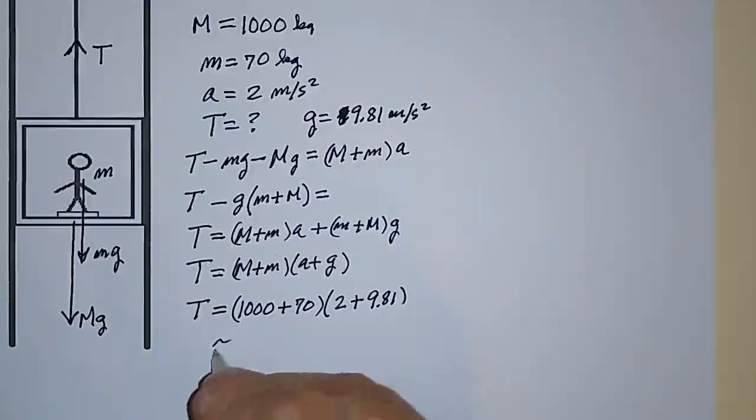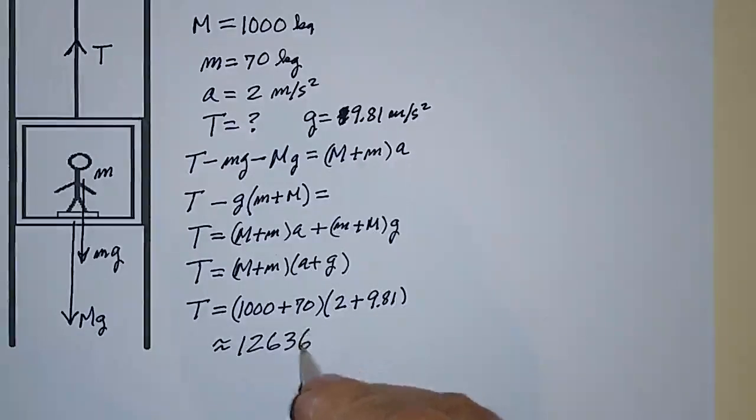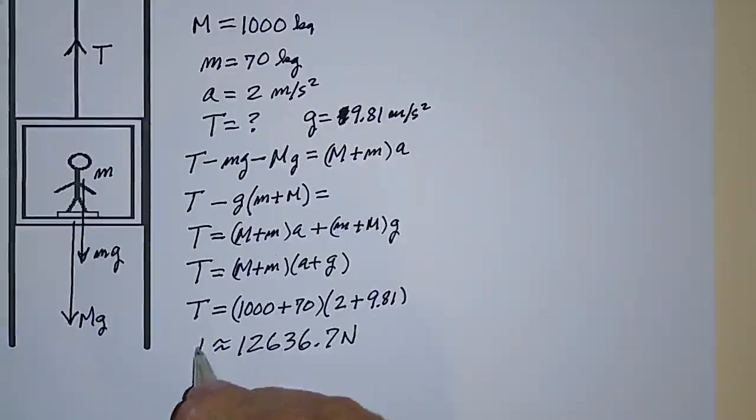And when you plug this into the calculator and press the proper buttons, the result is 12,636.7 newtons. That's what T is.